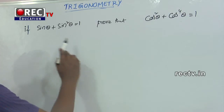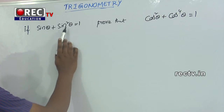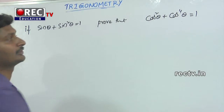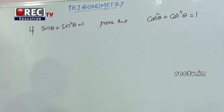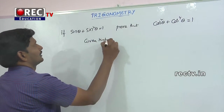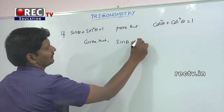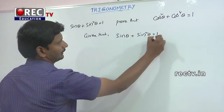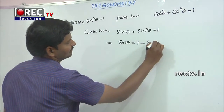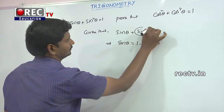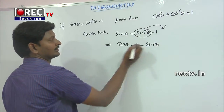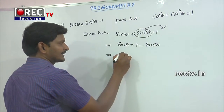Next question: if sin(θ) + sin²(θ) = 1, prove that cos²(θ) + cos⁴(θ) = 1. From the given condition, sin(θ) + sin²(θ) = 1, which implies sin(θ) = 1 − sin²(θ). By the first trigonometric identity, 1 − sin²(θ) = cos²(θ), so we have sin(θ) = cos²(θ).